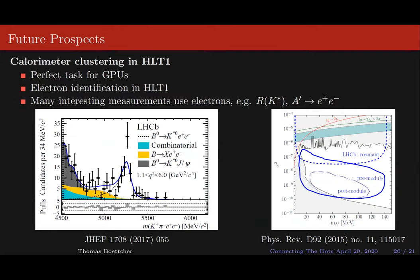Another area we'd like to pursue is calorimeter clustering. Typically in HLT1 we haven't done this because clustering is really hard, but it's kind of the perfect task for GPUs, as we've seen with the VELO. This would allow us to do electron identification in HLT1. Many interesting LHCB analyses rely on electrons — for example, RK*, which compares final states with electrons to final states with muons. We have dedicated muon triggers for this but no dedicated electron triggers. LHCB has also recently started contributing to dark photon searches, and the sensitivity plot for dark photon to electron-positron in run three would also really benefit from electron identification in HLT1.